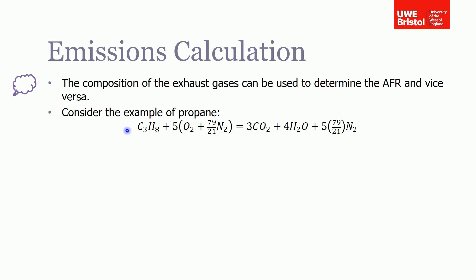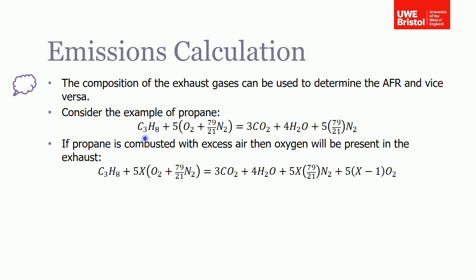To illustrate this, I'm going to consider the example of propane, which is C₃H₈. In a previous session I showed you how to balance this equation for stoichiometric conditions — where all the fuel reacts with the air and you only end up with carbon dioxide and water. Now, if we say that this propane is combusted with some excess air, then we're going to have excess oxygen in the exhaust. We don't know how much, so we're going to express it algebraically.